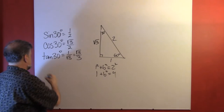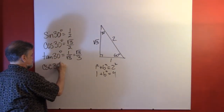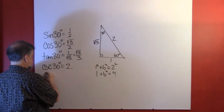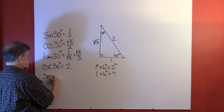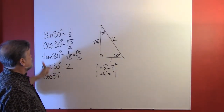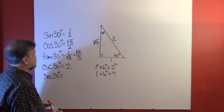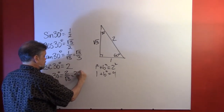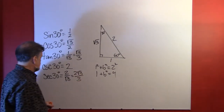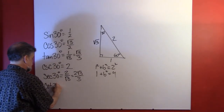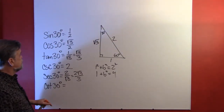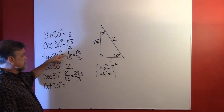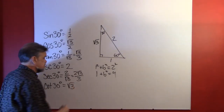The cosecant of 30 degrees is the reciprocal of the sine, so that's two. The secant of 30 degrees is the reciprocal of cosine, so that's two over the square root of three, which we generally write as two root three over three. And the cotangent of 30 degrees is the reciprocal of tangent — remember the tangent was one over the square root of three — so the cotangent is just the square root of three.